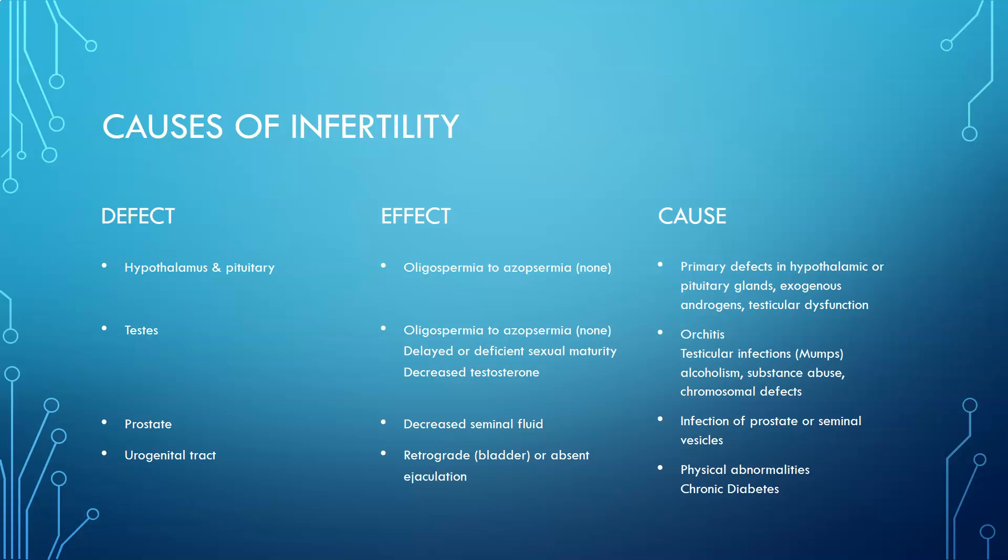If the defect is at the testes level, you can also get oligospermia or azoospermia. That could be caused by orchitis — inflammation of the testes — delayed or deficient sexual maturity, testicular infections like mumps, or decreased testosterone. Other causes include alcoholism, substance abuse, and chromosomal defects.